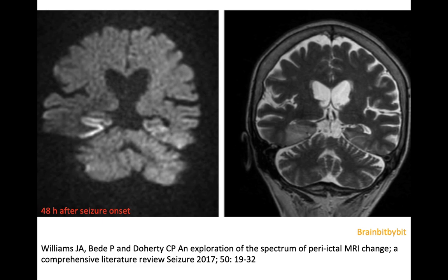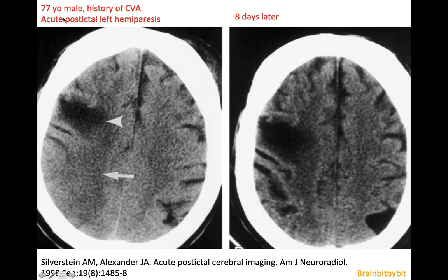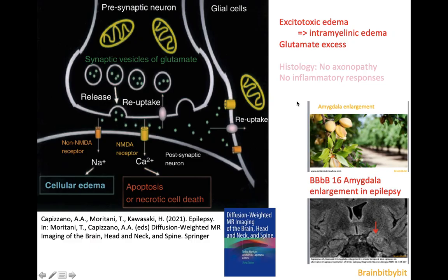The edema and swelling can be very extensive — for example, in this case of a 77-year-old male with post-stroke epilepsy. He had a post-ictal left-sided paresis, and on imaging you can see extensive swelling and edema in his left hemisphere. Eight days later, the paresis had decreased and you can see the expected atrophy in his right hemisphere. The edema and swelling is caused by glutamate leading to cellular edema, called excitotoxic edema. There is also intramyelinic edema between the blades of the myelin, with no inflammatory responses on histology.